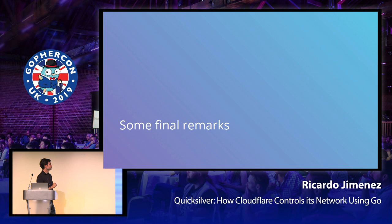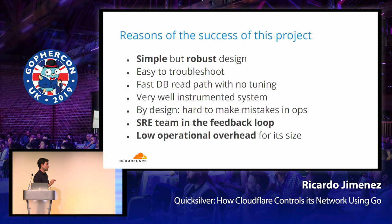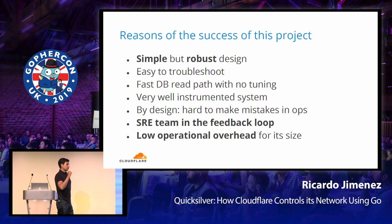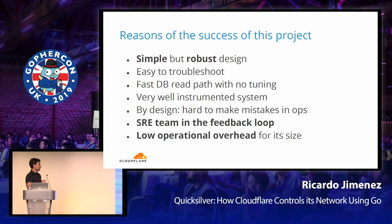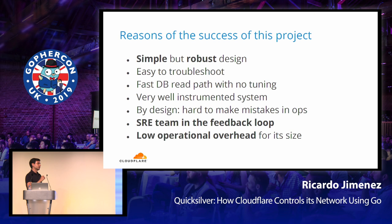Some final remarks: this project has been a success because it's very simple and robust in its design — it wouldn't be easy to troubleshoot otherwise. When something happens we can relatively easily understand what is going on. We achieved the goal of a fast config service so developers don't complain it's slowing down CDN responses. It's well instrumented so the operations team can monitor it effectively. By design it's very hard to make mistakes in operations — the SRE team was involved in the feedback loop early on and influenced a lot of the design. I'm really proud that we achieved a very low operational overhead given the size of this system. Thank you.